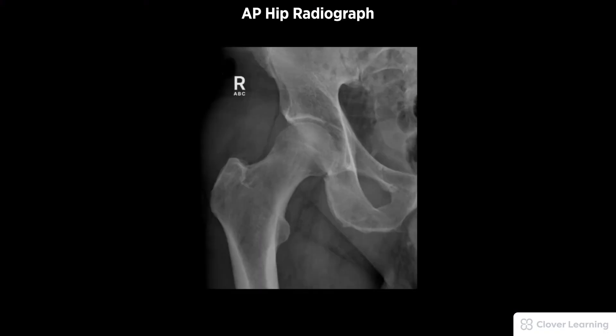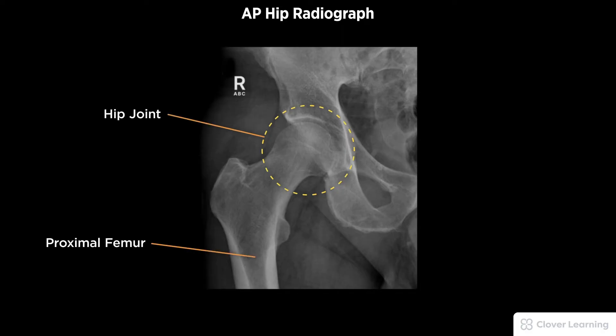A diagnostic AP hip radiograph must be free of motion and rotation. Demonstrated anatomy to include the hip joint and proximal one-third of the femur. Greater trochanter in profile with proper visualization of soft tissue and bony detail.